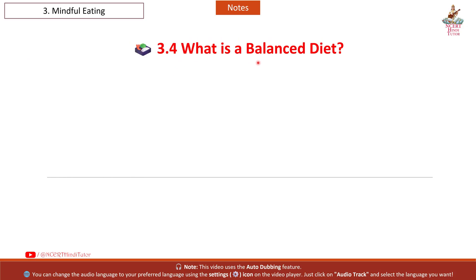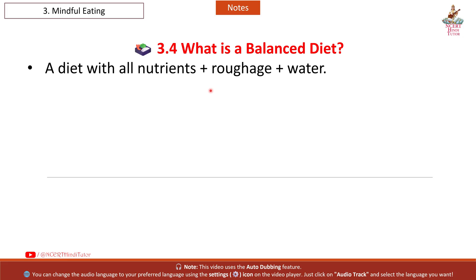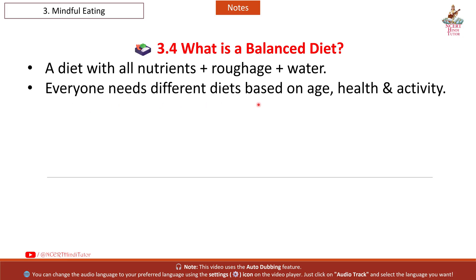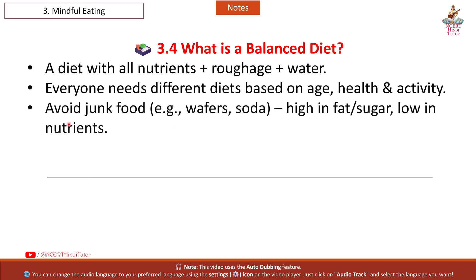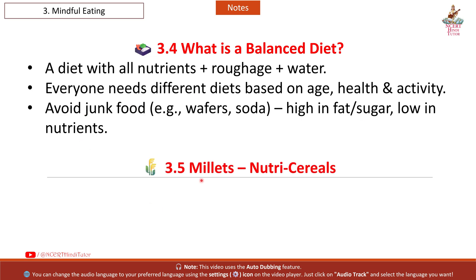Section 3.4: What is a Balanced Diet? A diet with all nutrients, roughage, and water. Everyone needs different diets based on age, health, and activity. Avoid junk food like wafers and soda – high in fat and sugar, low in nutrients.